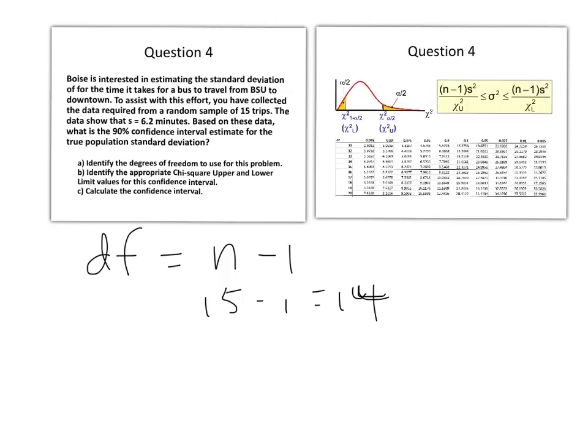We need to know degrees of freedom to use the chi-square table to get our appropriate values. And remember, in this case, we're going to be working with two values with a confidence interval estimate, an upper and a lower. So that's the next thing we'll do is we'll identify the chi-square upper and lower limit values for this confidence interval.